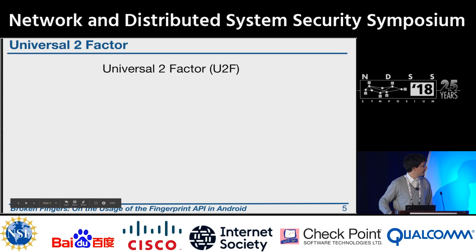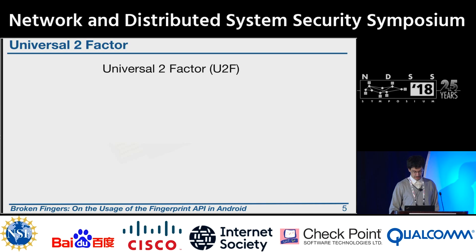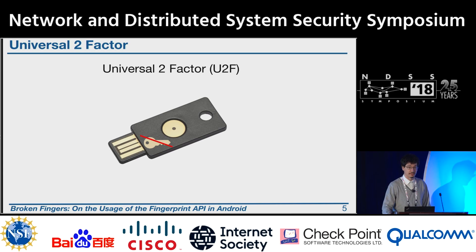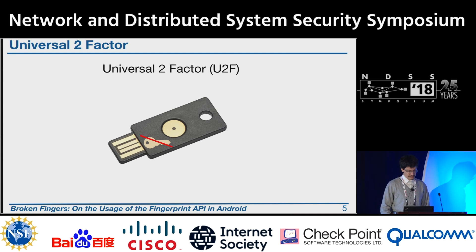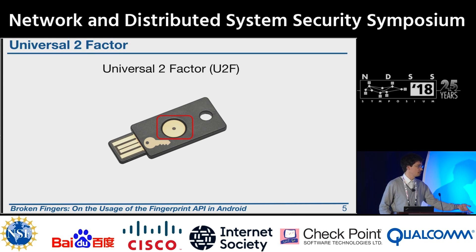In browsers, the current state of the art is to use two-factor authentication. In particular, there is a standard called Universal Two-Factor in which you have an external device that contains a cryptographic key that can be used to sign the intention of the user — for instance, to sign a transaction like paying a friend $100. This key needs to be unlocked by the user pressing a tiny button on the physical device, and then the key can be used to sign transactions, confirming the intention of a user.